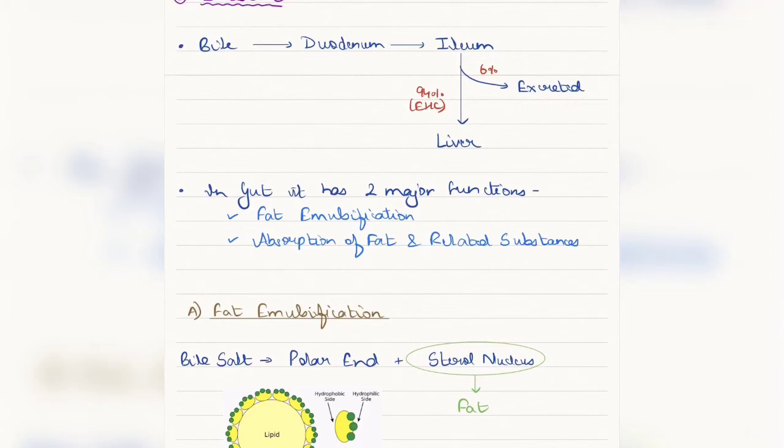Therefore, now coming to the functions of bile in the intestine. In intestine, bile has two major functions. The first being fat emulsification. Second, absorption of fat and fat-related substances.